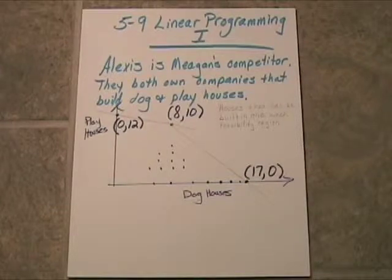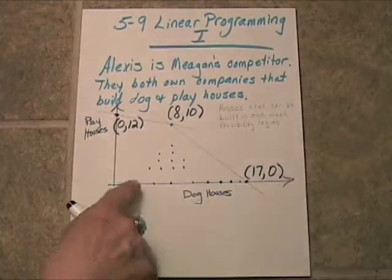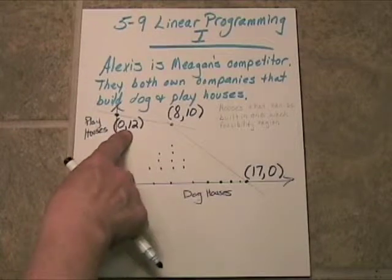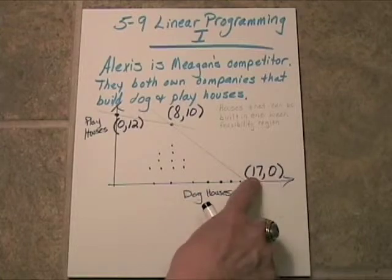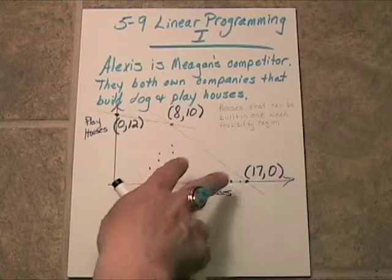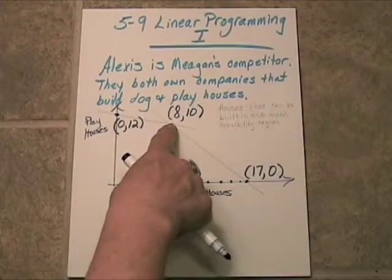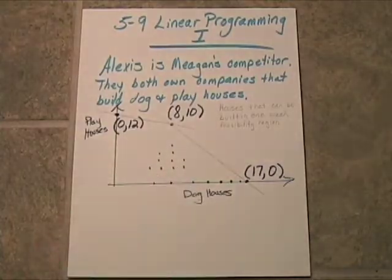Now the vertices are going to be very important. If she doesn't build any dog houses, she can build 12 playhouses. If she doesn't build any playhouses, she can build 17 dog houses. And if she does a little bit of both here, we've got a vertex at 8 dog houses and 10 playhouses.